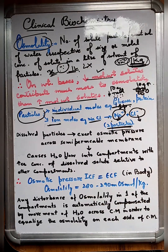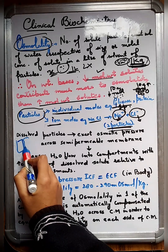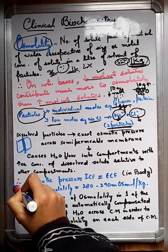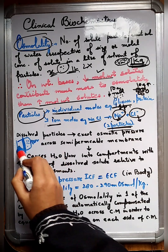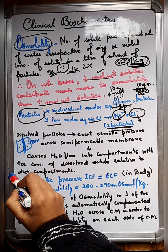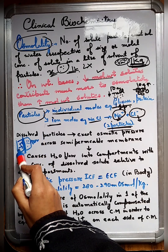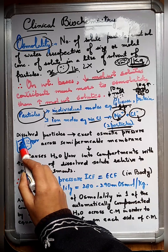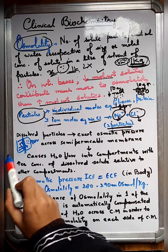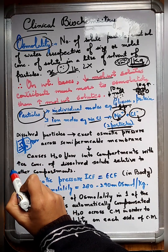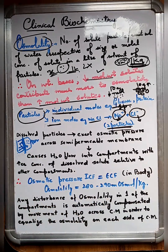Let's now see how fluid movement occurs due to osmolality. Consider one compartment and another compartment with a semi-permeable membrane in between. Where there is a higher concentration of solute compared to the other side, the dissolved particles exert osmotic pressure across the semi-permeable membrane. Due to this pressure, water flows from the low solute concentration compartment to the higher concentration compartment. This is how the flow of water occurs.